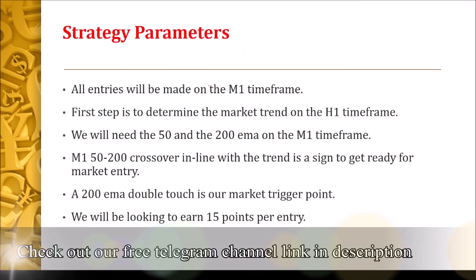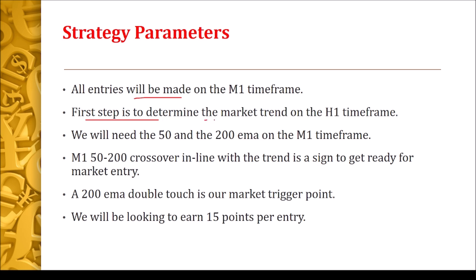For the strategy parameters, entries are made on the M1 time frame. The first step is to determine the market trend on the H1 time frame — are we in an upward or downward market context? We will need the 50 and the 200 EMA on the M1 time frame. These are exponential moving averages applied to close, and they are the only indicators we need.